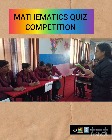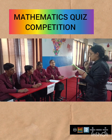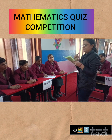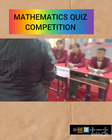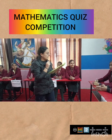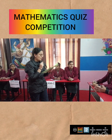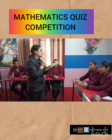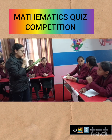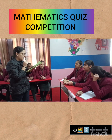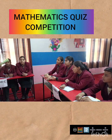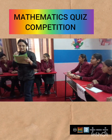The right answer for the probability question is 8 by 12. Team D, your question: when a die is thrown, what will be the probability of getting an even number? The right answer is three by six.